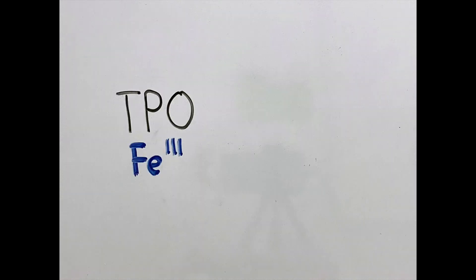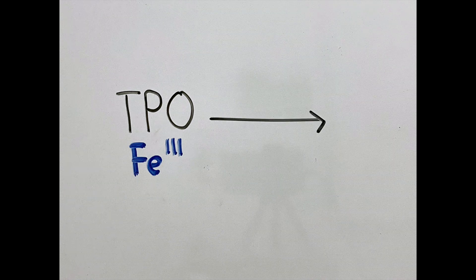TPO is a heme-containing enzyme which catalyzes the first two steps of the thyroid hormone synthesis process. TPO begins with iron in the oxidation state 3, which becomes oxidized to the oxidation state 4.